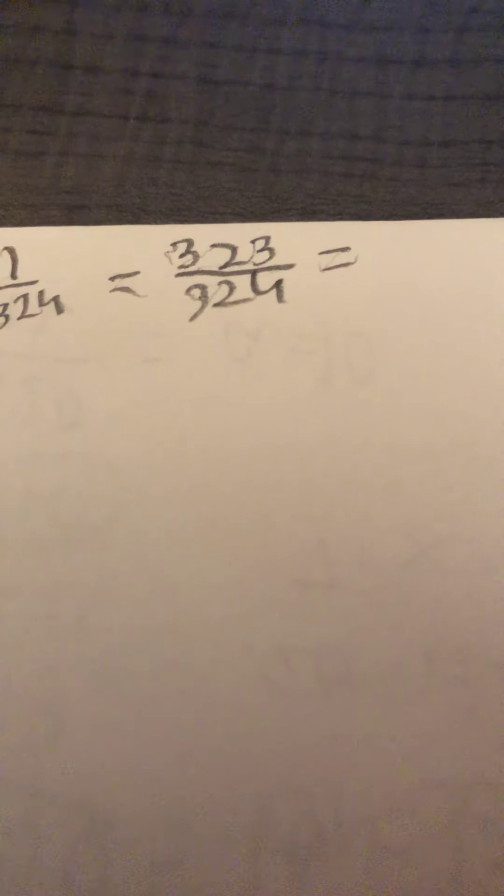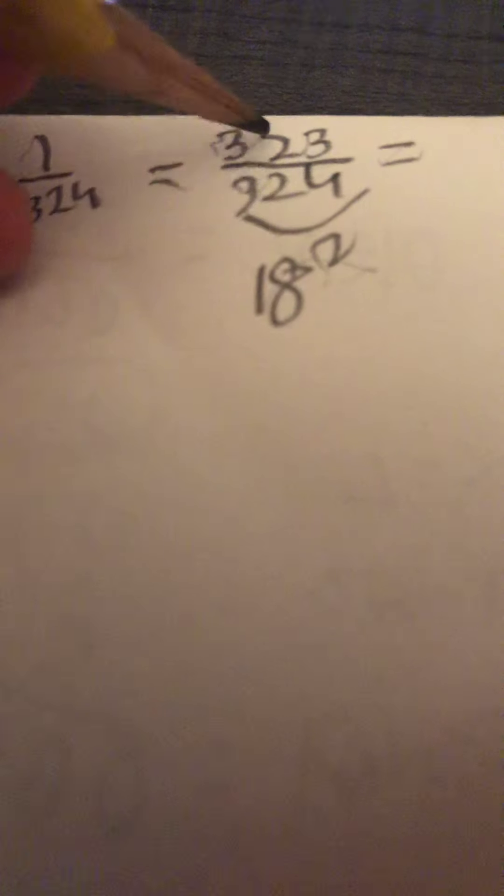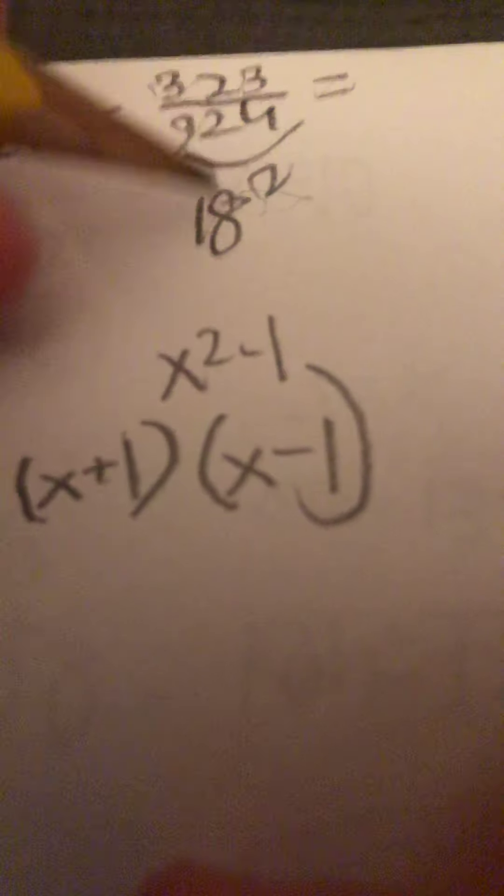We're saying this is some fraction times another fraction. I noticed that 324 is 18 squared, and this is 1 minus 18 squared. So when we get something like x squared minus 1 — those of you who do MathCounts should know this — it factors as (x+1)(x-1). So we plug in 18 for x.